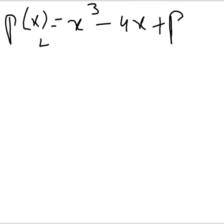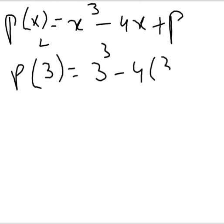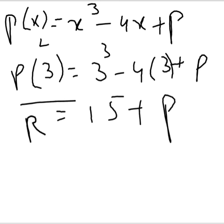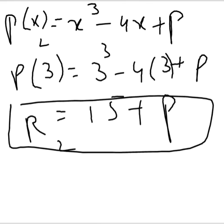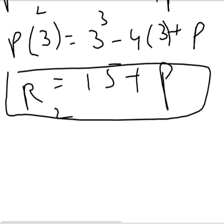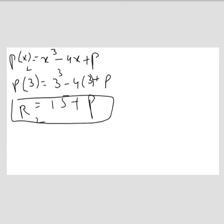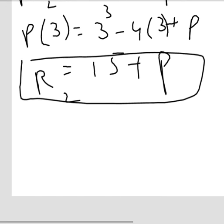We already found x = 3, so no need to find it again. Just substitute: p(3) = 3³ - 4 × 3 + p. When you solve it, you get 15 + p. This is remainder R2. Now, as stated in the problem, both remainders are equal, so equate R1 and R2.